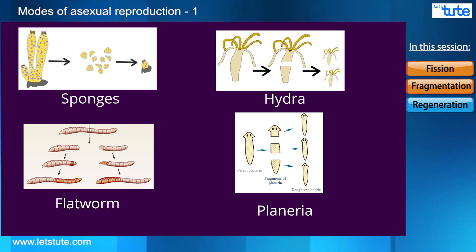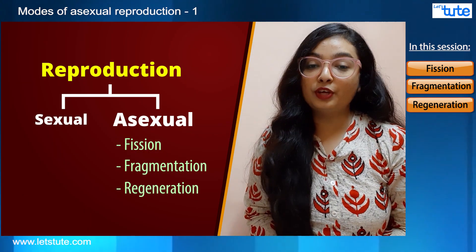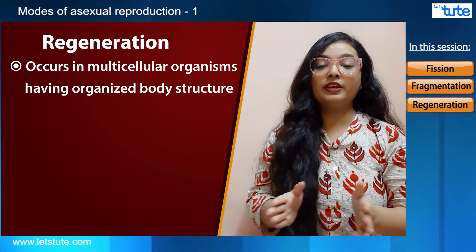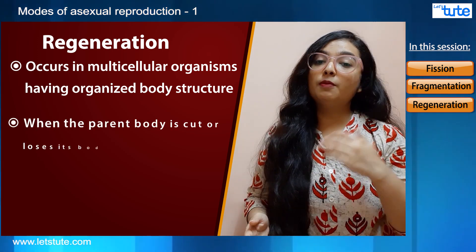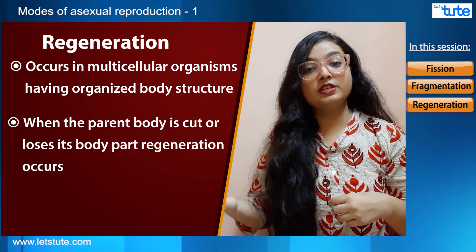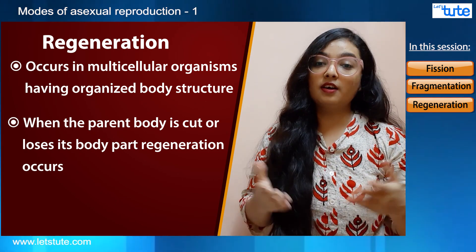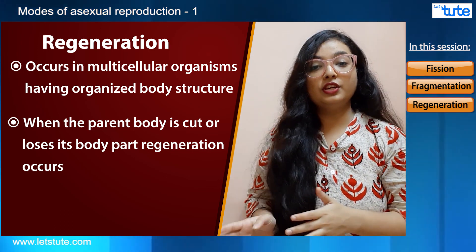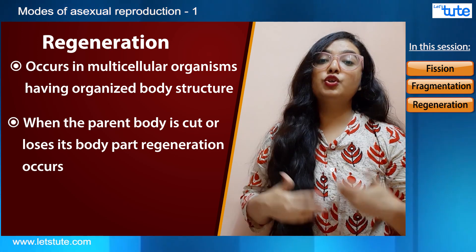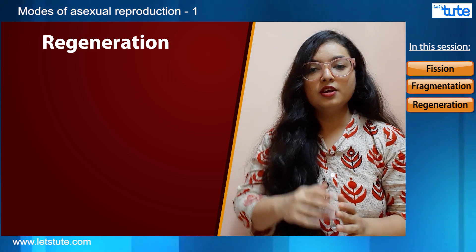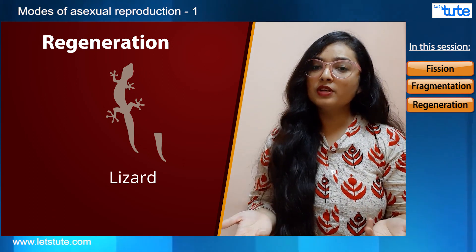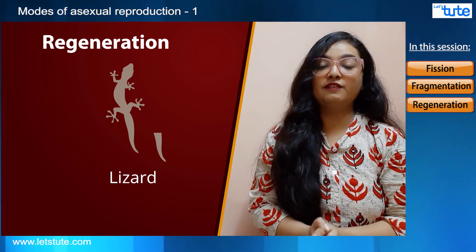The third method of asexual reproduction is regeneration. Regeneration is a process which occurs in many multicellular organisms with organized body structures. When the parent body is cut or broken up into many pieces, or when it loses an organ or part of its body, regeneration can occur. Regeneration is the ability of a parent body to grow back a part that was lost. For example, a lizard that loses its tail has the ability to grow it back — this is possible because of regeneration.